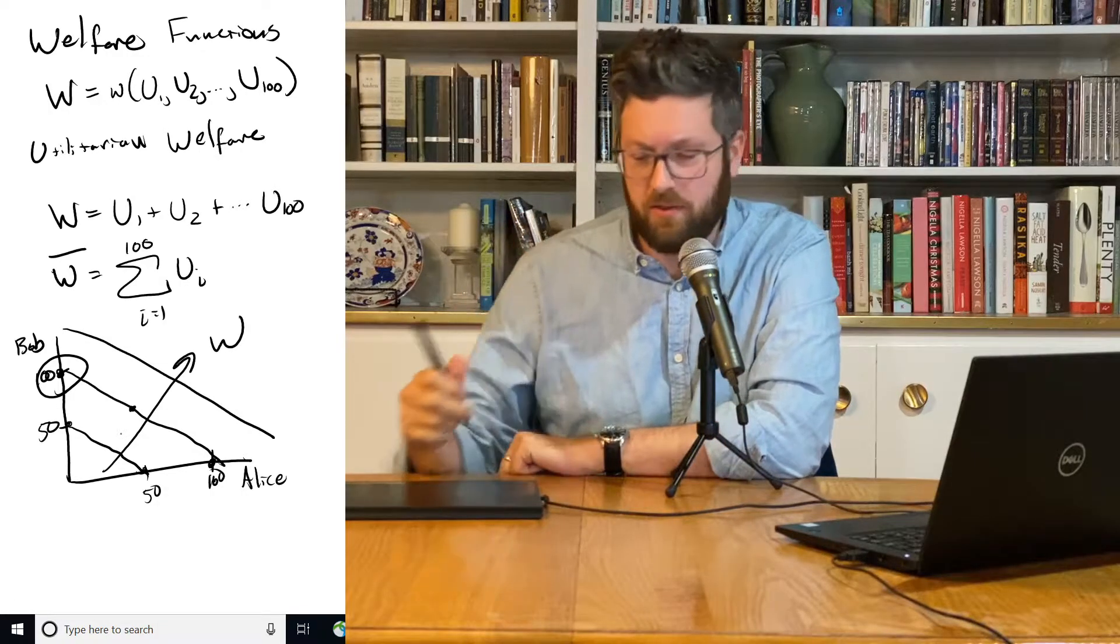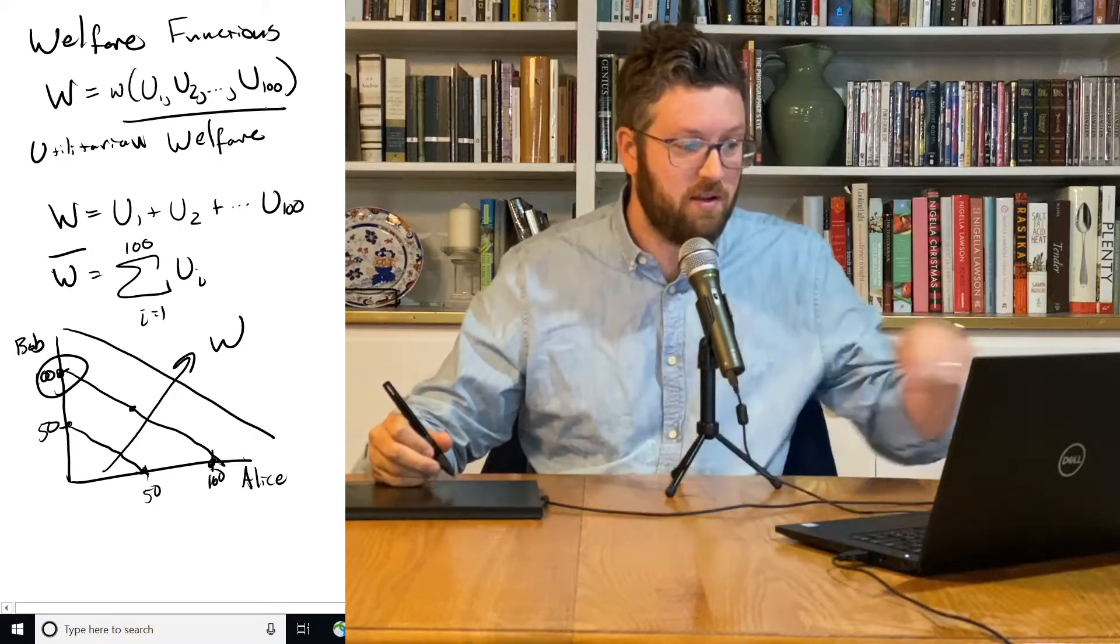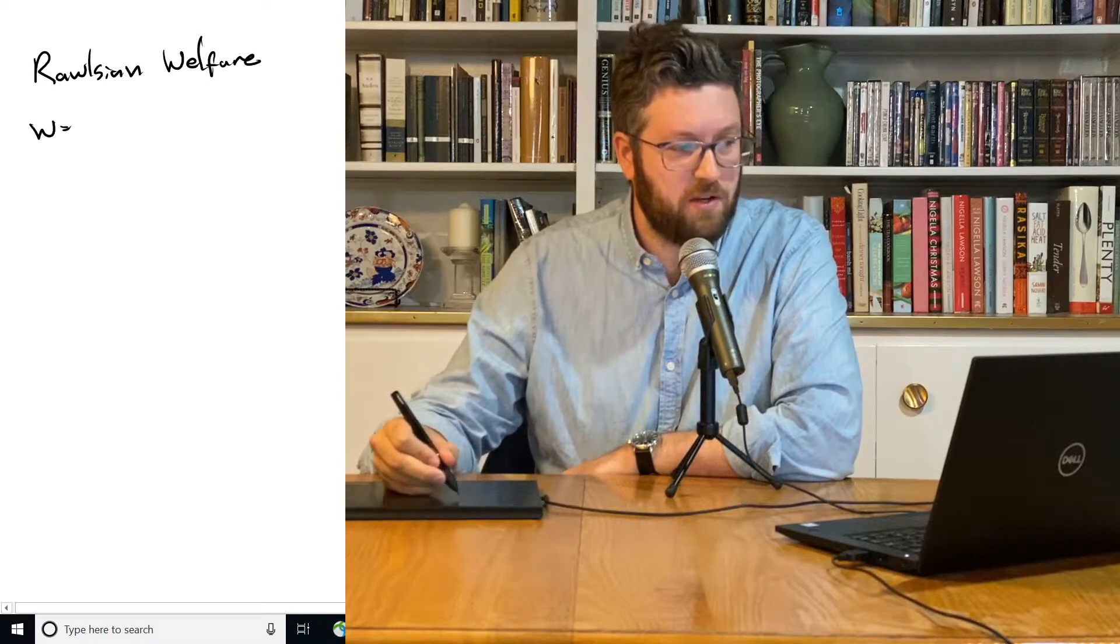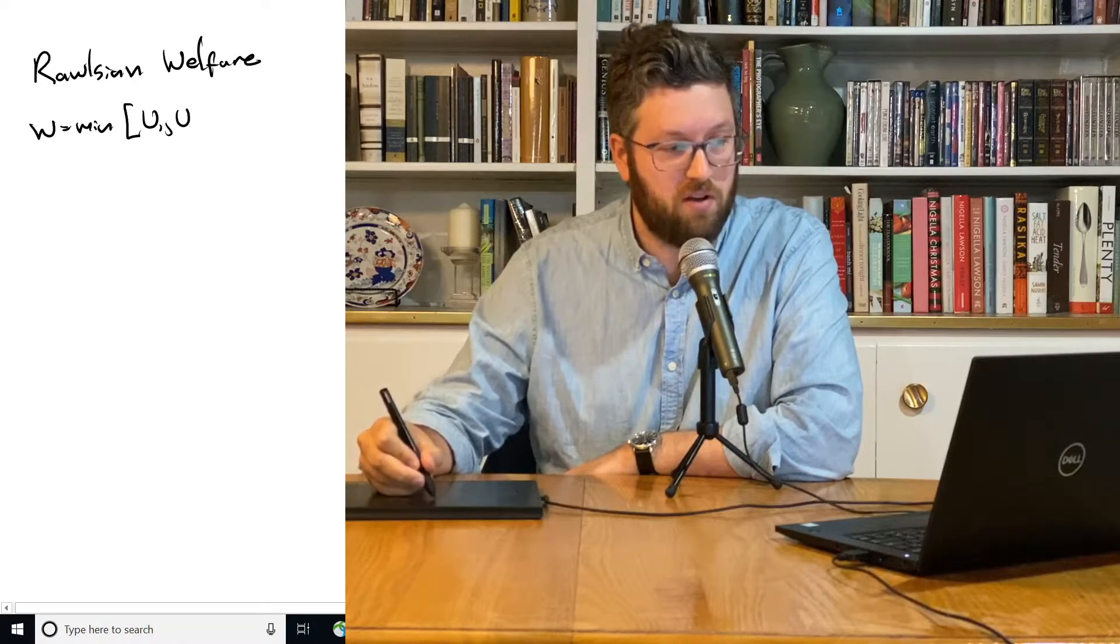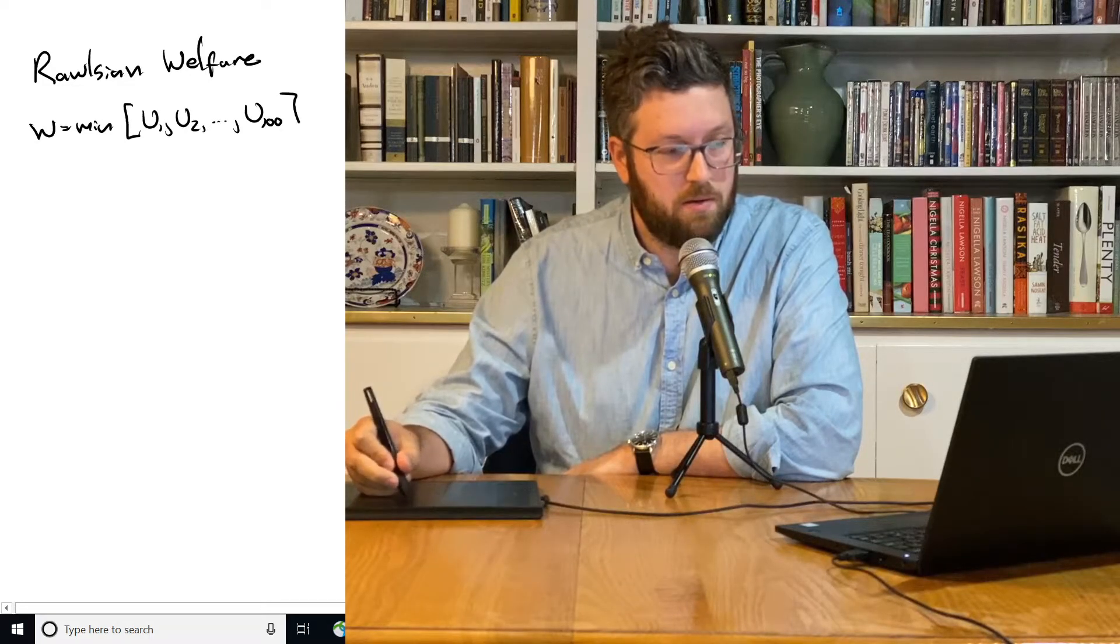But there are other ways to do it. That's not the only way to combine all these preferences. Another framework is based on the work of a philosopher named John Rawls. This is the Rawlsian welfare framework. And in this one, what we end up doing is welfare is equal to the utility of whoever in society is worst off.